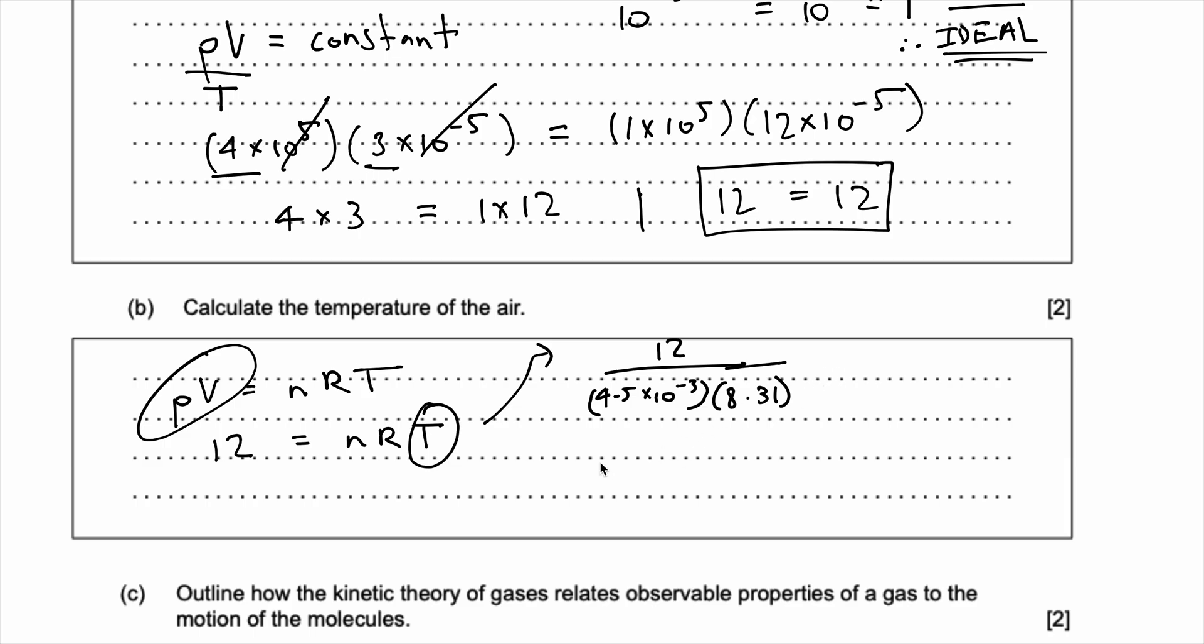Now, you put this on your calculator, what do you get? Okay, let's see. 12, 4.5 into 10 to the power of... Times by 8.31. You get 320.89 Kelvin. Okay. Yeah, 8.9 Kelvin. 8.99 Kelvin, actually. And so, we can actually just convert this and say it's 321 Kelvin for rounding purposes.